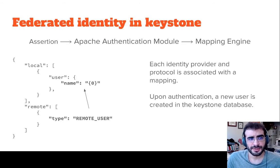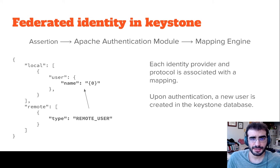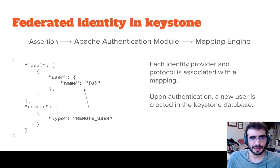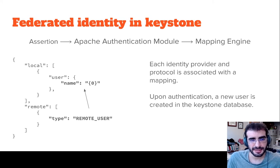In Keystone, federated identity is not handled directly by the Keystone service — it is handled by an Apache authentication module. This module parses the assertion coming from the identity provider and forwards the user to Keystone alongside the different attributes it has parsed. This is then processed by the mapping engine, which translates these attributes into attributes of a user, which is then created and persisted in the Keystone database.